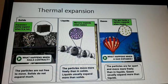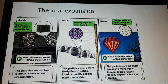For thermal expansion of solids, there are some consequences. Railway tracks must have gaps to allow for expansion. Thermal expansion can cause wires to snap. Long structures like bridges need expansion rollers. These are the consequences of the expansion of solids.